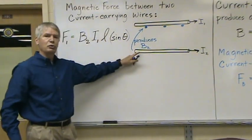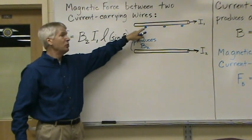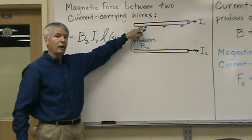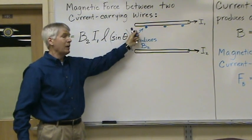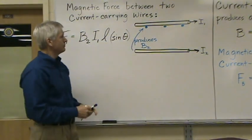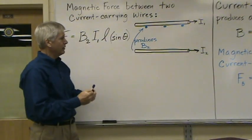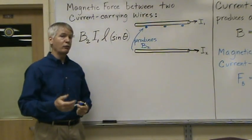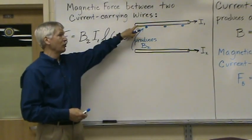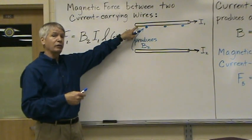So wire 2 produces magnetic field B2 right next to this wire coming out of the board. Now let's figure out the direction of the force that will be acting on this current carrying wire in the magnetic field.